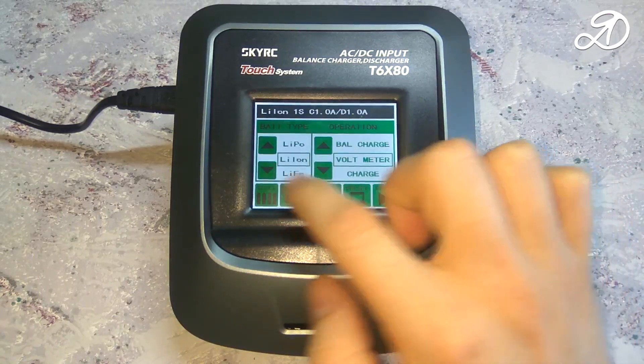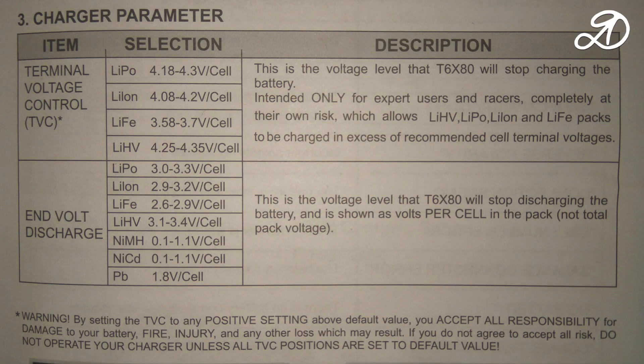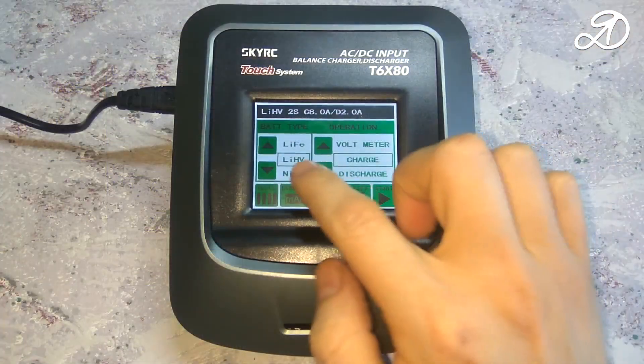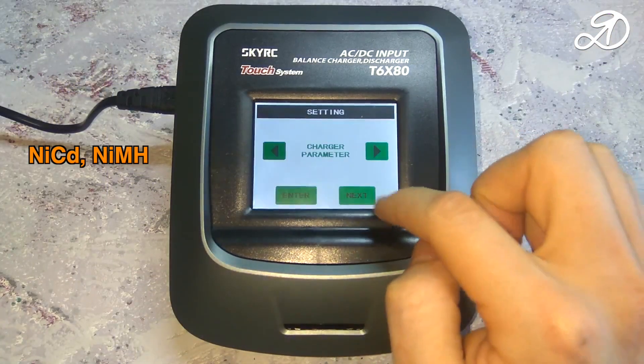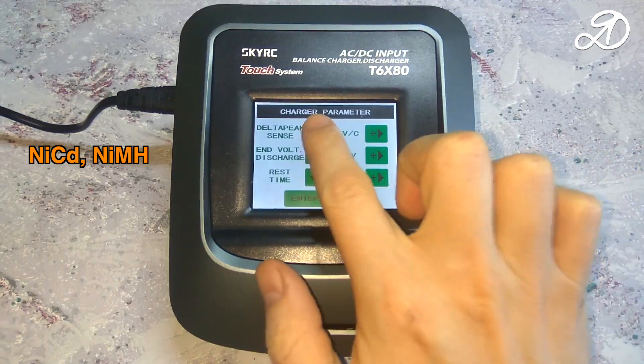The charging parameters for other types of batteries can be found in the table. For these types of batteries, you can set a delta peak to automatically stop charging.